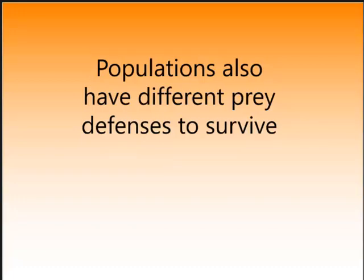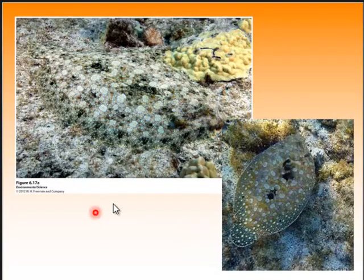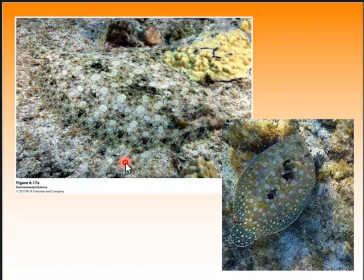Populations have different prey defenses as well — this helps them survive. The flounder exhibits camouflage, which makes it difficult for predators to see it. That's a predator-prey defense.